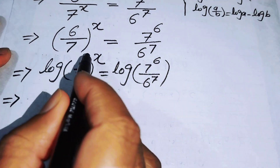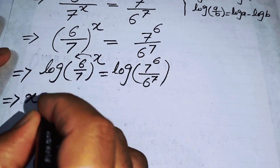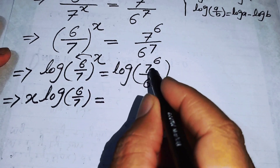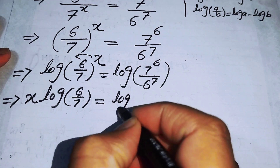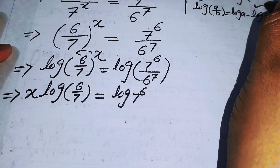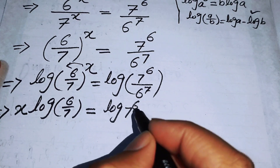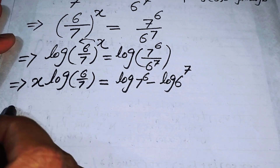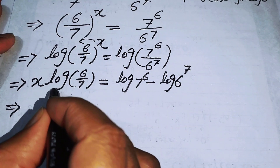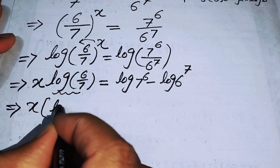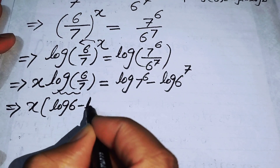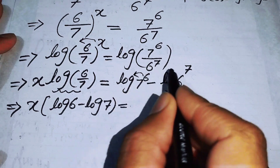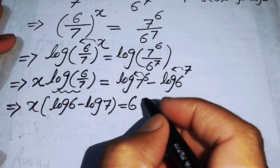On the left-hand side, we bring the exponent to the front of the log and write x times log of 6 over 7. On the right-hand side, since we have a fraction inside the log, we apply the logarithmic property and write it as log 7 to the power of 6 minus log 6 to the power of 7. We then apply the power rule again to get log 6 minus log 7 on the left, and 6 times log 7 minus 7 times log 6 on the right.